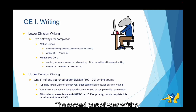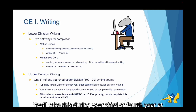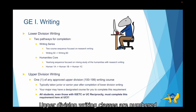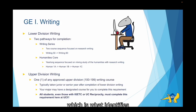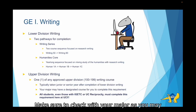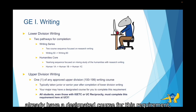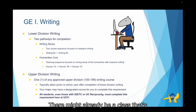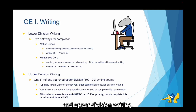The second part of your writing GE is upper division writing. You'll take this during your third or fourth year at UCI after you've already completed lower division writing. Upper division writing classes are numbered 100 through 199 with a capital W, which is what identifies the class as an upper division writing class. Make sure to check with your major, as you may already have a designated course for this requirement, which means you wouldn't have to specifically find an upper division writing course. There might already be a class incorporated into your major that fulfills both the major requirement and upper division writing.